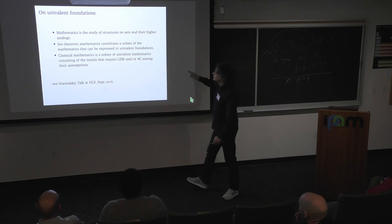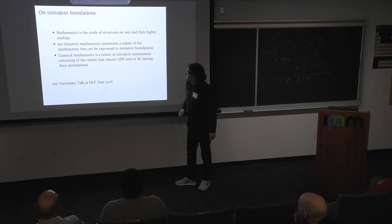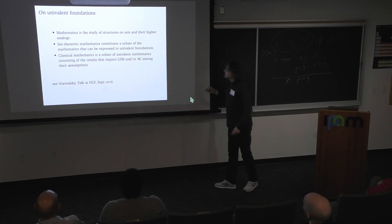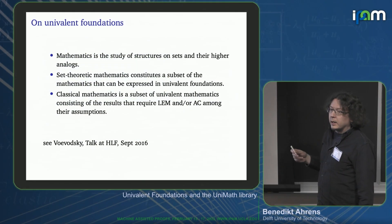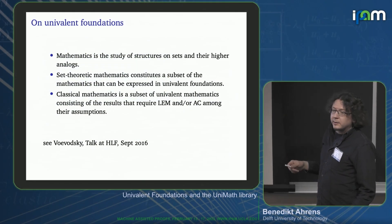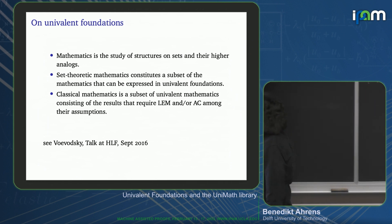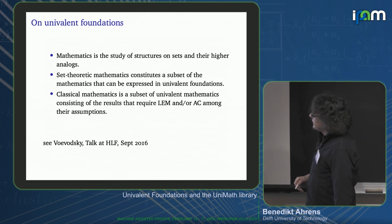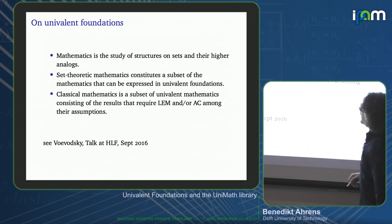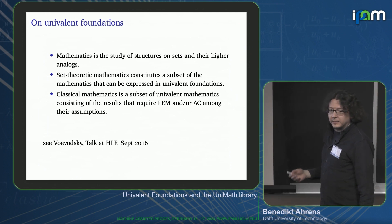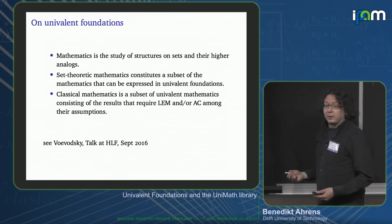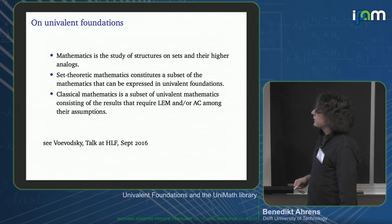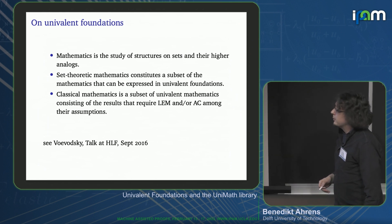As a summary on univalent foundations, quoting from a talk by Voevodsky approximately one year before he died: mathematics is the study of structures on sets and their higher analogues — by which he means not categories and higher categories, but groupoids and higher groupoids. Set-theoretic mathematics constitutes a subset of the mathematics that can be expressed in univalent foundations. Similarly, classical mathematics is a subset of univalent mathematics, consisting of results that require the law of excluded middle and/or the axiom of choice.